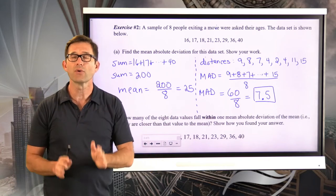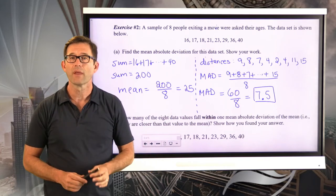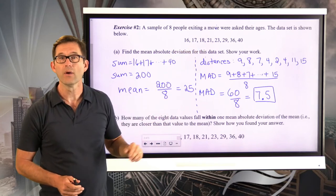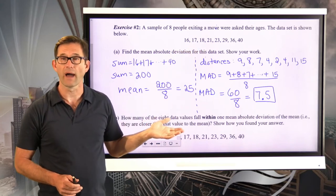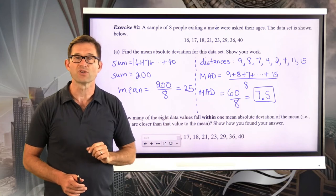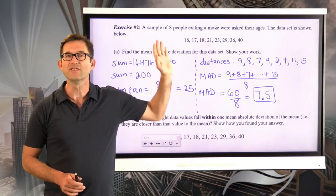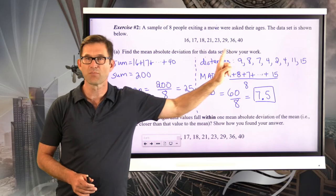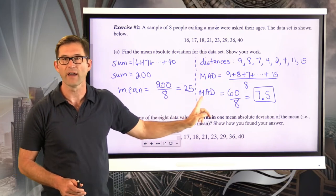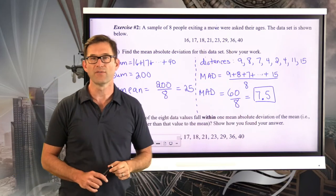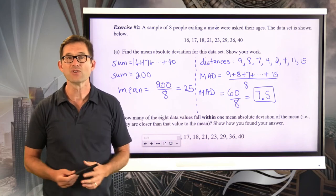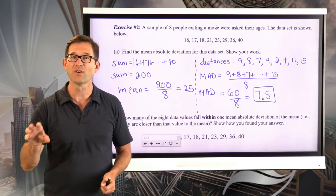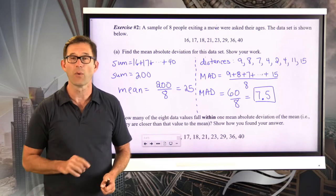It's important to understand how to interpret that. The average age of the people exiting the movie was 25. But there's another average now: the average distance that a person's age was from 25 was 7.5 years. On average, somebody in this data set was seven and a half years away from the mean of 25.